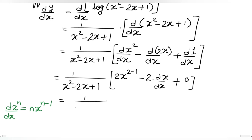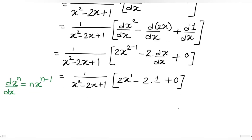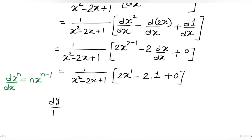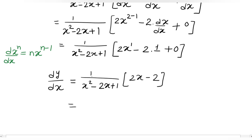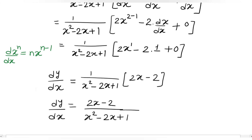तो dy/dx = 1/(x² − 2x + 1) × (2x − 2 + 0), जो हो जाता है (2x − 2)/(x² − 2x + 1)। इस तरह हमने logarithmic function को differentiate करके उसका derivative find out कर लिया।